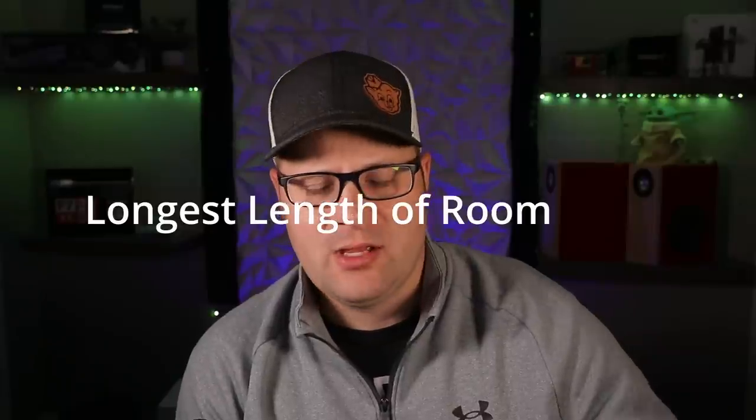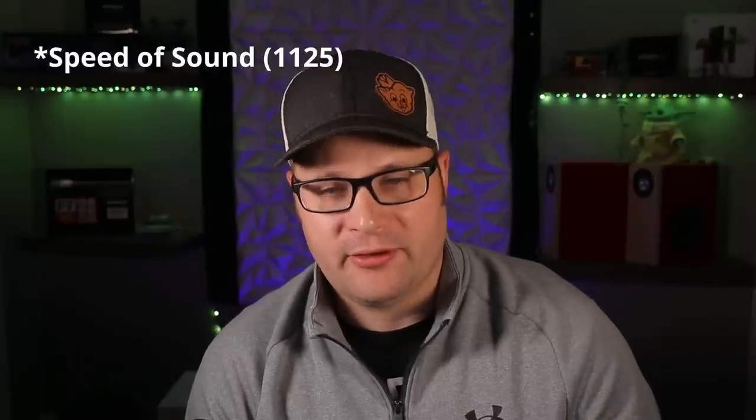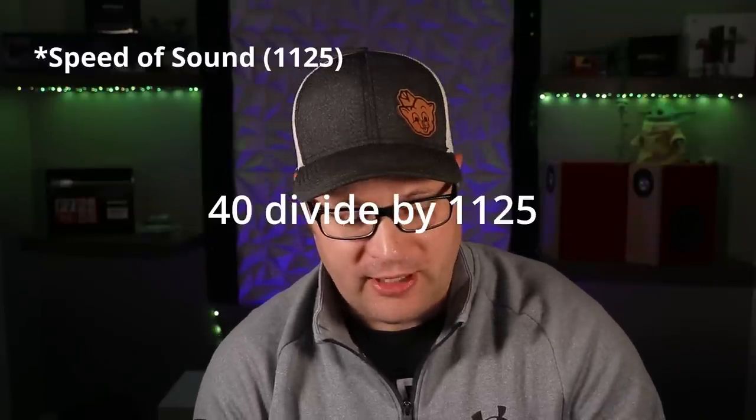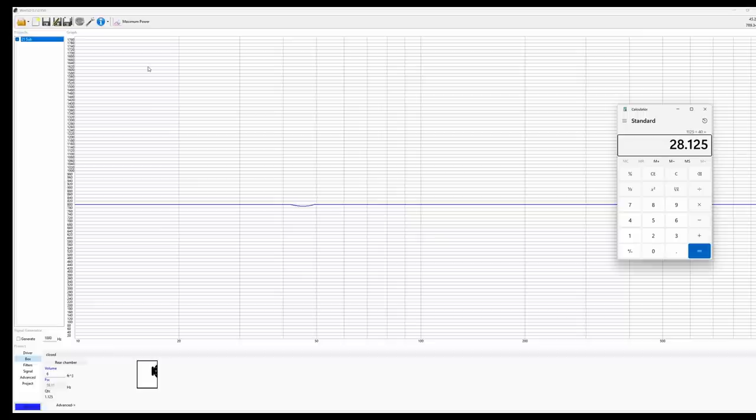Aaron's Audio Corner did a great video on this. The basic premise is if we take the longest length of our room, we can estimate where our room gain starts. Longest length of my room, let's say it's 20 feet. We'll do 20 feet times two, that's 40 feet, then divide by feet per second which is 1125. So 1125 divided by 40 gives us the frequency at which our room should start gaining.